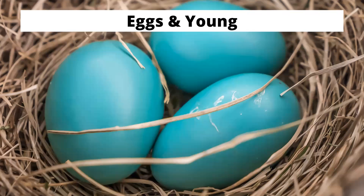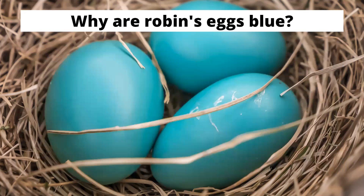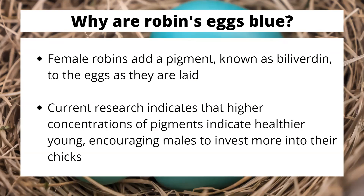All of our Oscines have a different strategy when it comes to their eggs, which is really apparent in pictures. Most birds are going to have white or near-white eggs, whereas passerines can actually have eggs that are different colors. A lot of North American species are going to lay clutches of several eggs, but unfortunately some are also going to be brood parasitic. The big question that comes up is why are they different colors — for example, why are the robin's eggs that bright, beautiful blue color?